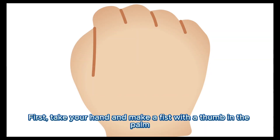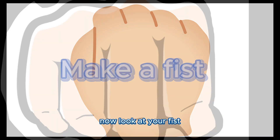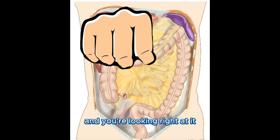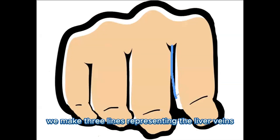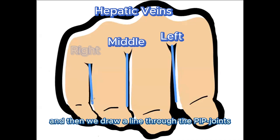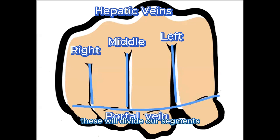First, take your hand and make a fist with the thumb in the palm. Now look at your fist and imagine that your fist is the liver and you're looking right at it. We make 3 lines representing the liver veins, and then we draw a line through the pip joints representing the portal vein. These will divide our segments.